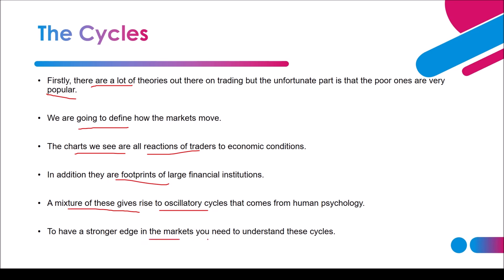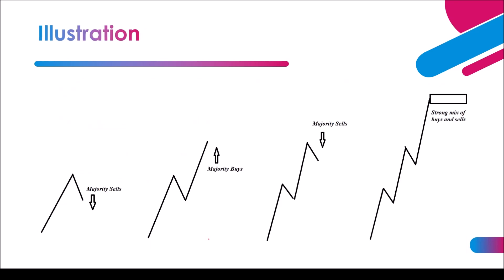A mixture of these two gives rise to oscillatory cycles that come from human psychology. To have a stronger edge in the markets you need to understand these cycles — you need to dream them, drink them, be in them — so that you actually catch the highest probability trades. This is how the psychology works and how the markets react to print out what we see on the charts.